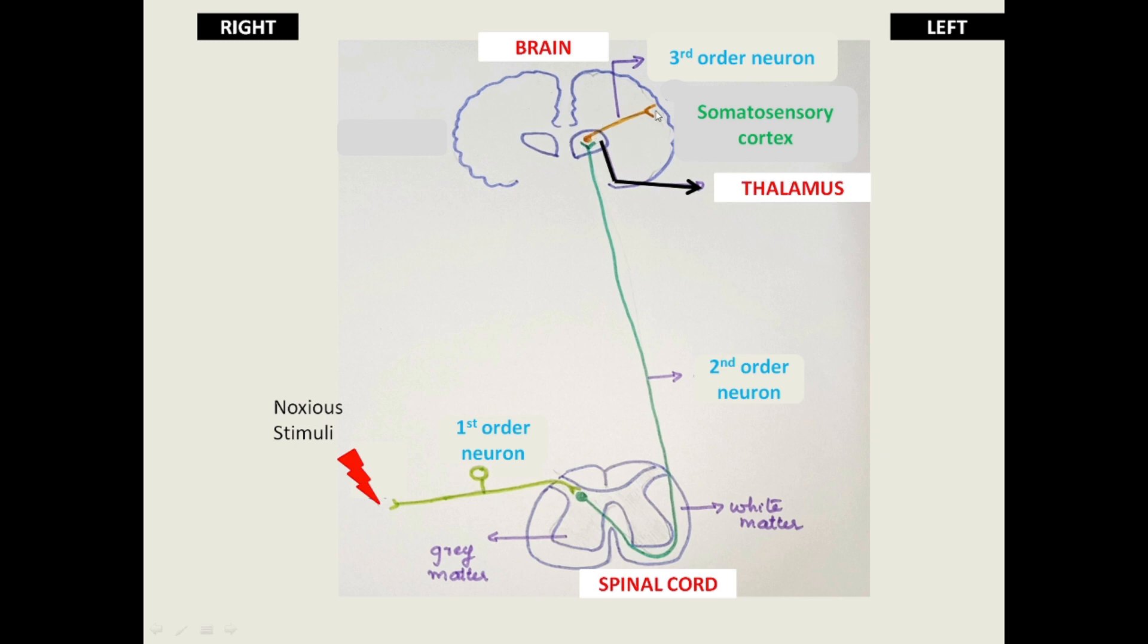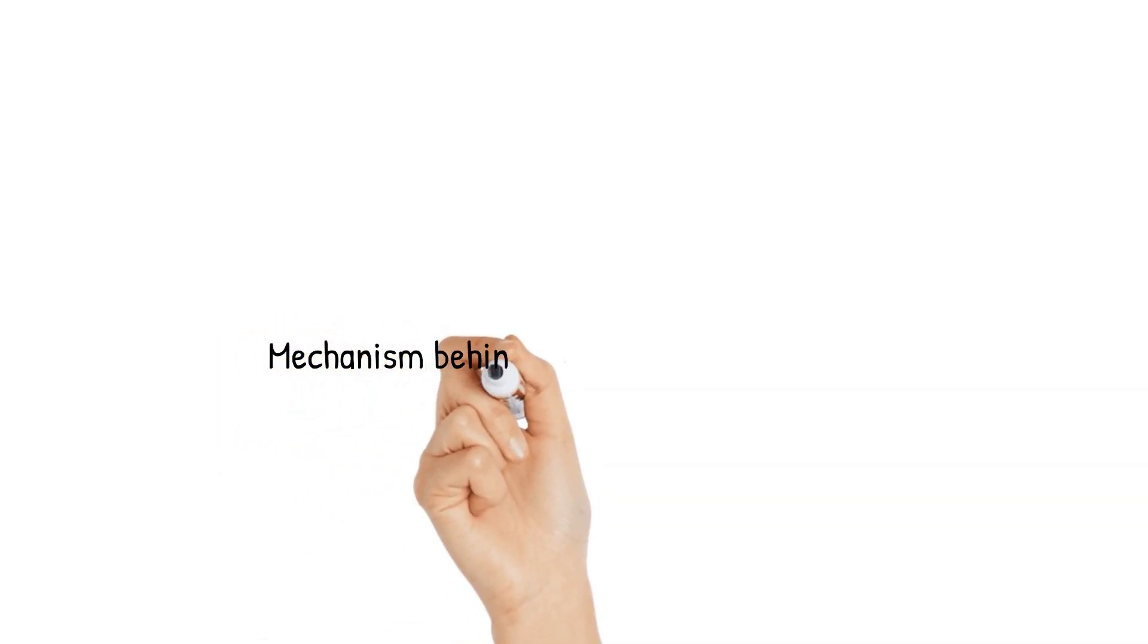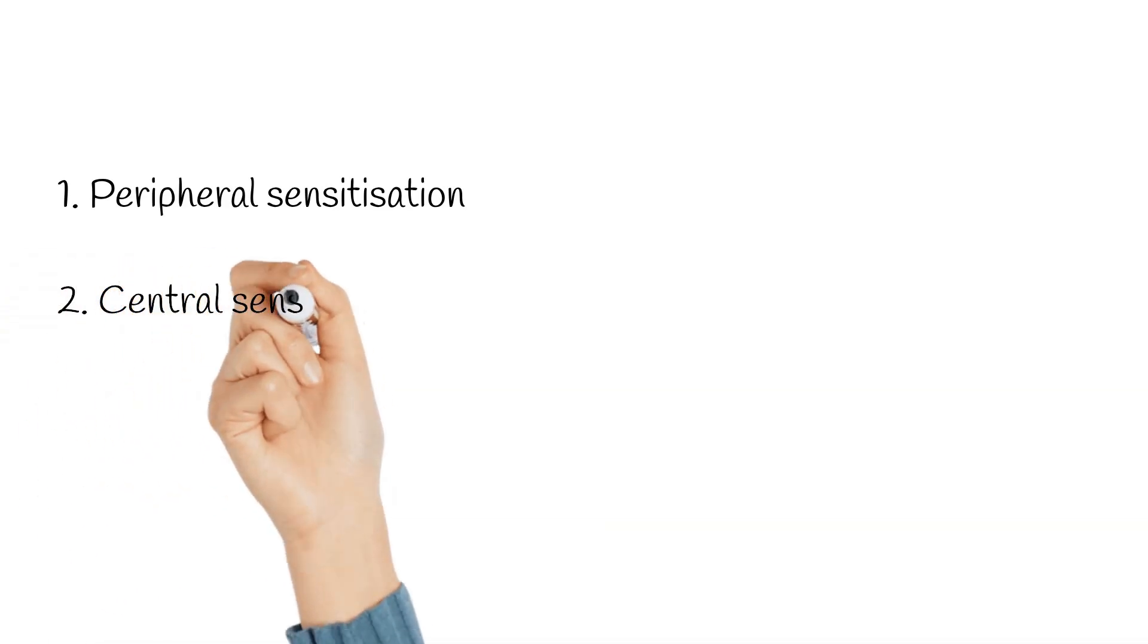From the thalamus, the third-order neuron arises and this terminates in the somatosensory cortex. And this forms the pain pathway. So what is the mechanism behind hyperalgesia and allodynia? There are two processes involved called peripheral sensitization and central sensitization. These processes lower the threshold for activation and increase their responsiveness.